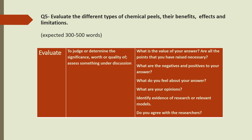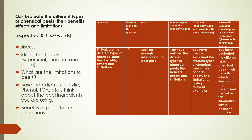Question five: we're evaluating again — looking at positives and negatives and determining their value to form your own opinion. We are looking at the different types of chemical peels, their benefits, effects, and limitations. The expected word count is 300 to 500 — you don't get marked down for going over, but be careful not to waffle beyond the word count without significance, as you don't get extra marks for it. Sometimes summarising is the best way to keep within your word count.